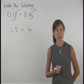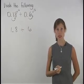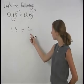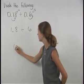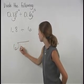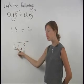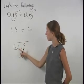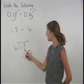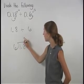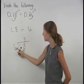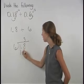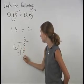Now we can use the same method we used in the last section, rewriting this problem as 6 divided into 1.8. Notice that 6 doesn't divide into 1, but 6 divides into 18 exactly 3 times. 3 times 6 is 18, and 18 minus 18 is 0.